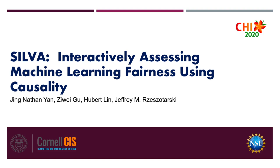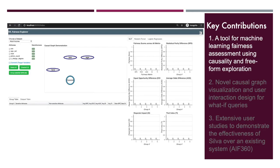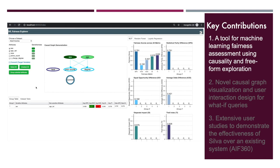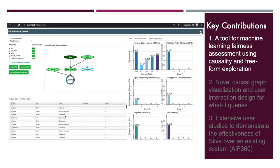We present Silva, a tool for assessing machine learning and fairness using causality. Silva accepts models and datasets as input, computes and visualizes a causality graph over dataset attributes, and visualizes chosen fairness metrics.